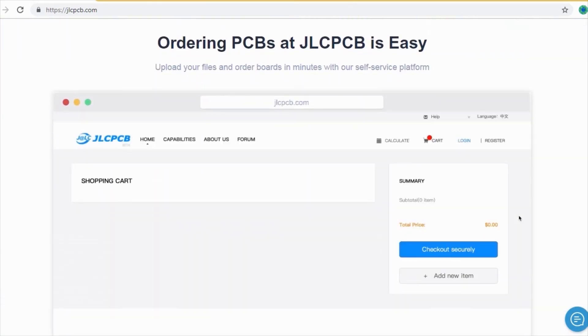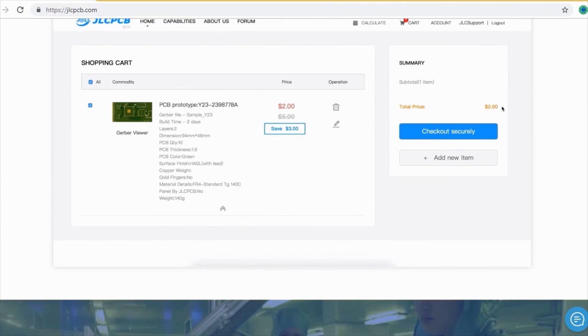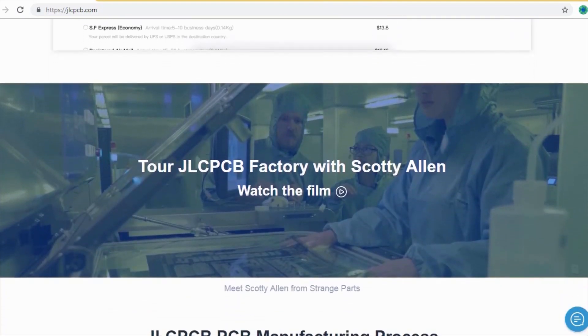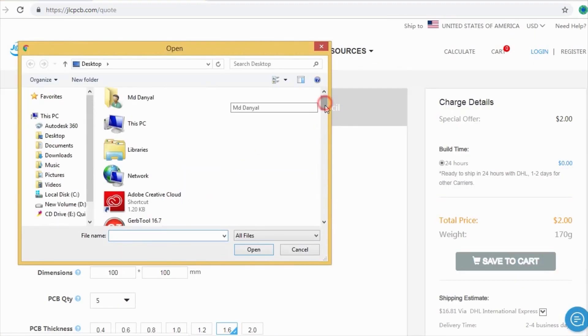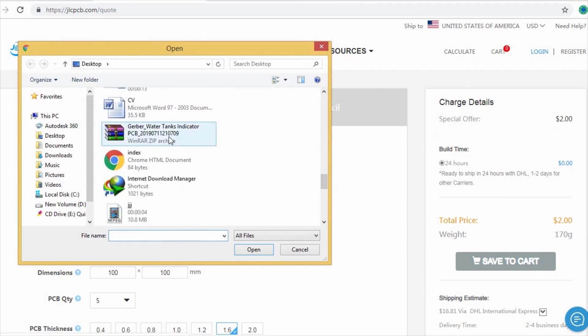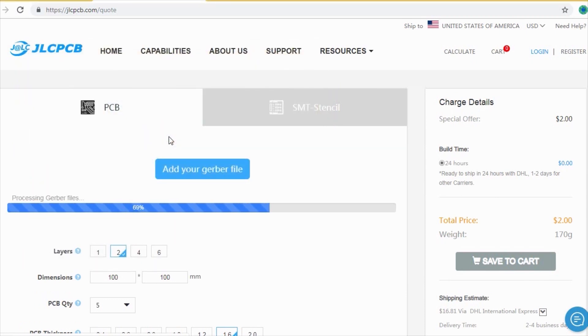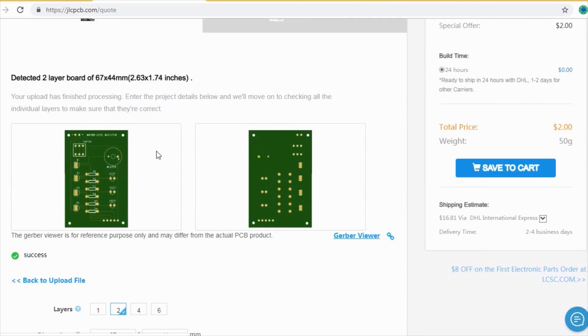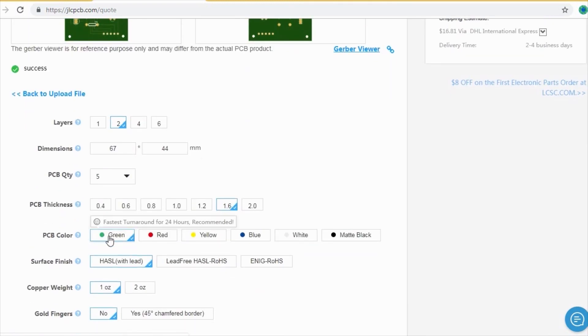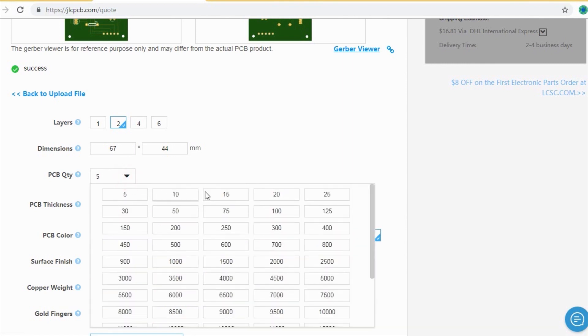Ordering PCB with JLCPCB is very easy and simple. You should just create your Gerber file and upload to JLCPCB. Here you can order your high-quality PCB at a very cheap price. After that you should just select your desired PCB color from different colors and select the quantity of the PCB.